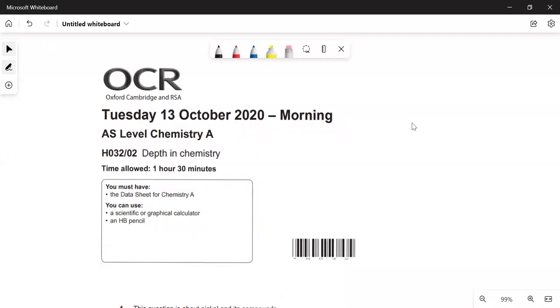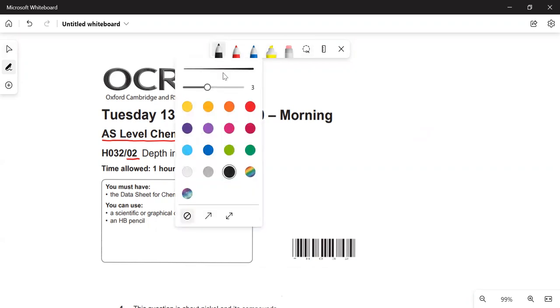In this video, I'm going to go through the OCR AS level chemistry paper. This is the 2020 paper, it's paper two, depth in chemistry. I'll just do the first half in this video and the second half in a later video.